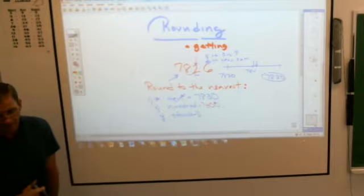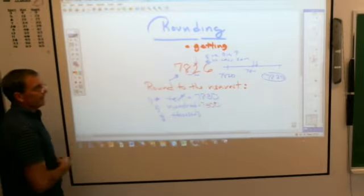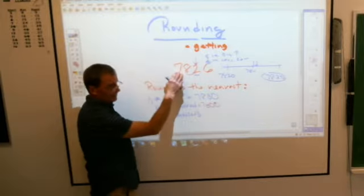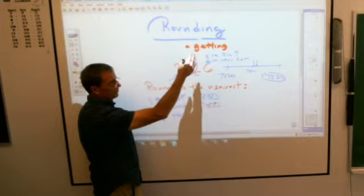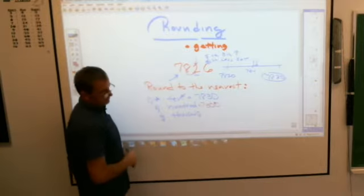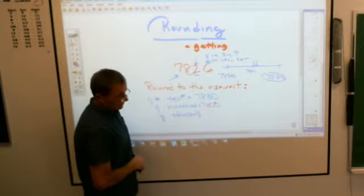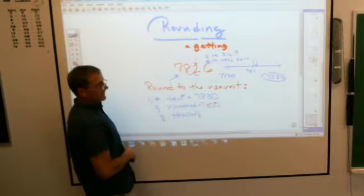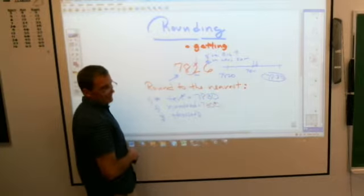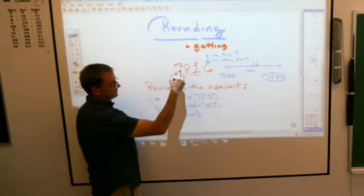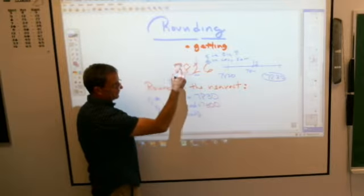Same thing is true if I'm rounding to the nearest thousands place. If I'm counting by thousands, my choice is it's either going to go down to 7,000 or it's going to go up to 8,000, or stay 7,000 or go up to 8,000. In this case, it's going to be what, Jacob? Is it going to be 7,000 or 8,000?